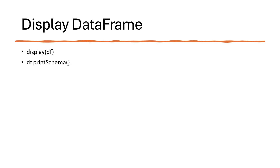To display a DataFrame there are two ways: we can use the display() function passing the DataFrame, or we can call printSchema() on the DataFrame, which gives the schema in a tree-like format showing all column names and data types. It's a good way to inspect the structure of your DataFrame.